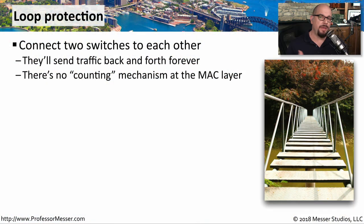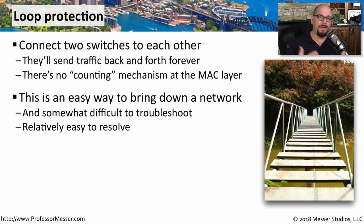At the MAC address level, there's no counters or any other way to tell if a frame has been seen before by a particular device. That means if you create a connection between two switches and then create another connection between those same two switches, you will have created a loop. That loop will cause traffic to constantly be sent back and forth until you sever it. As more traffic is added, the network is quickly brought to its knees. This is a very easy way to bring down anyone's network.